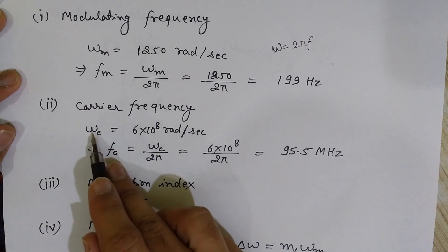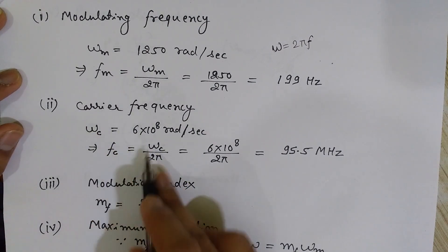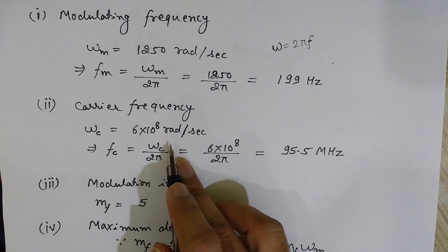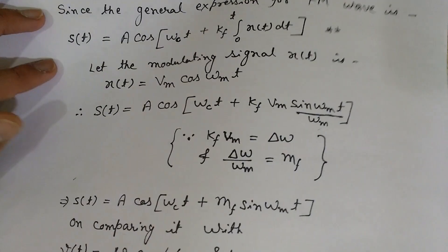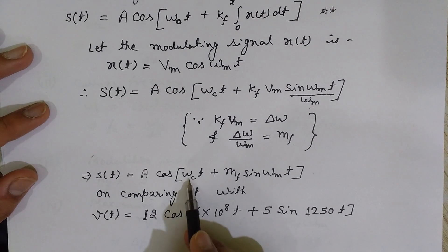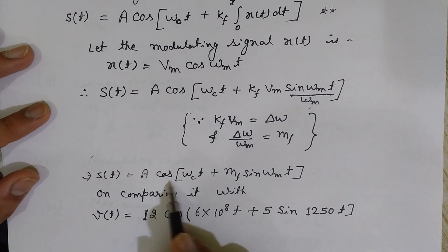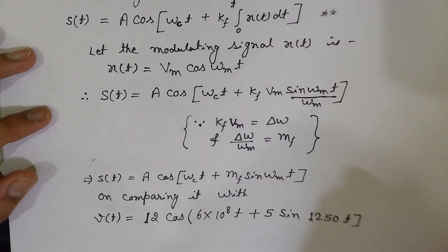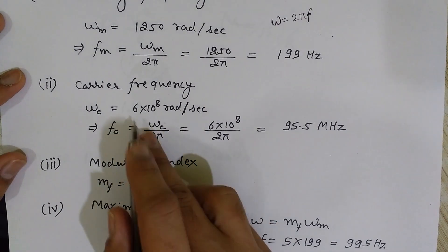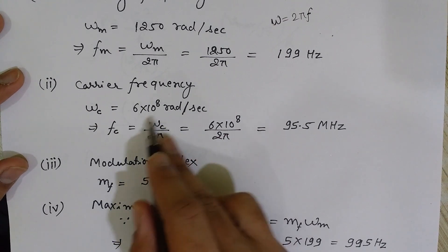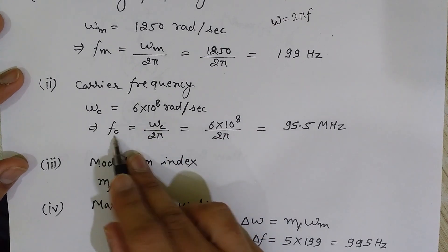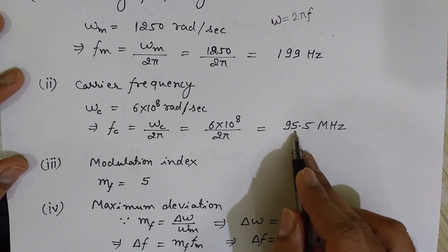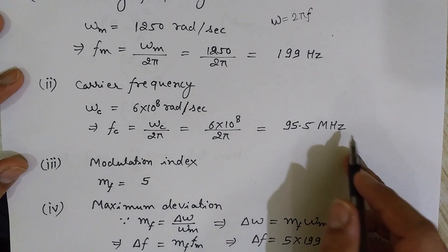The carrier frequency is denoted by ωc. By comparison, ωc is the term appearing before t inside the cos function. Comparing, 6×10⁸ is the ωc — the carrier frequency in radians per second. Dividing by 2π gives the carrier frequency fc = 6×10⁸ / 2π ≈ 95.5 MHz.